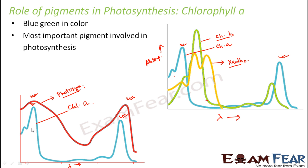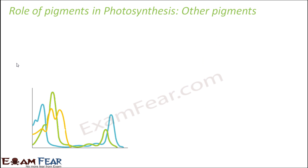Without chlorophyll A, photosynthesis cannot take place. Since chlorophyll A is the only one which performs the main function, what is the need of having other pigments like chlorophyll B, xanthophylls, or carotenoids? That is why chlorophyll A is a necessary pigment — without it, photosynthesis cannot happen. Let us now look at the role of the other pigments and why they are present in plants.